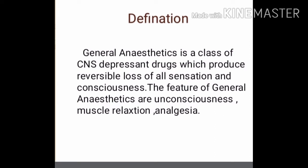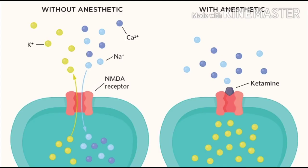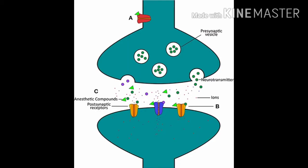The ideal general anesthesia state is characterized by loss of all sensation, including analgesia and muscle relaxation. Neuronal depression in specific areas of the CNS is believed to be largely responsible for the anesthetic state. The areas involved include many cortical regions represented by excitatory pyramidal cells and inhibitory or excitatory stellate cells.